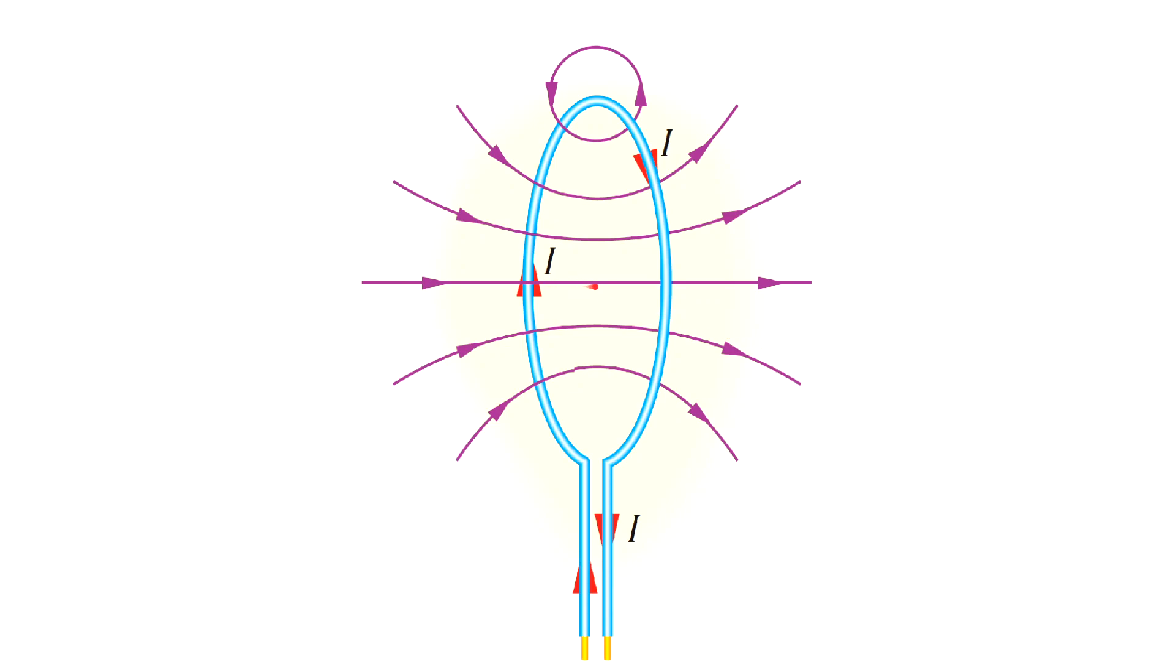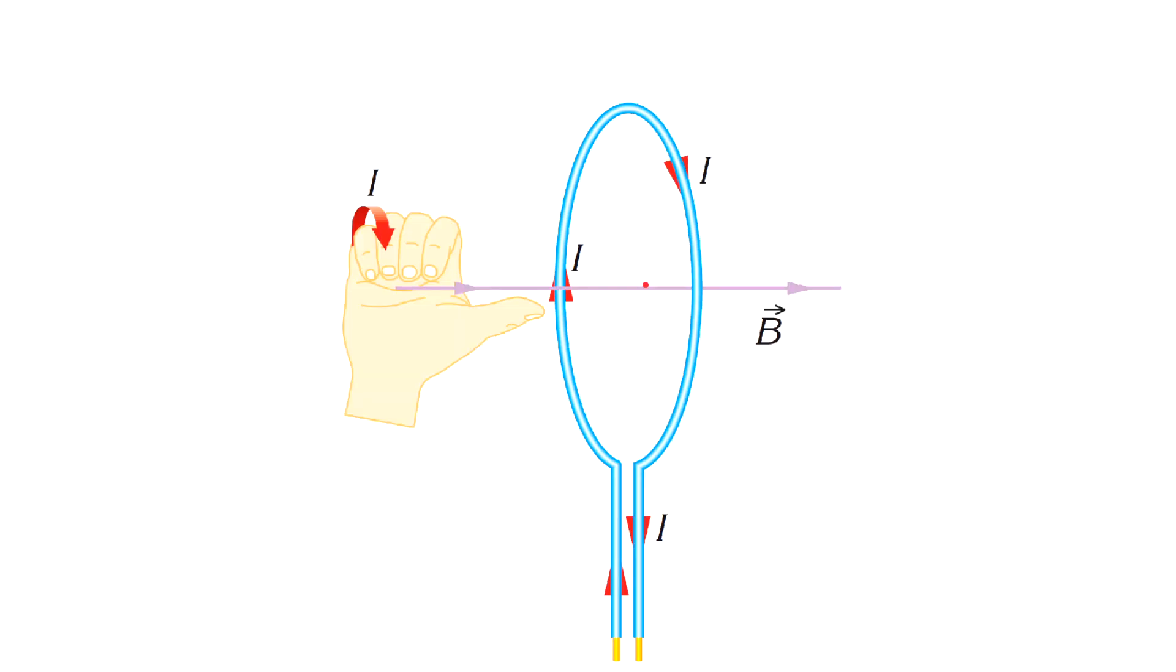These are magnetic field lines of a loop. For a circular loop the right hand rule is used in the following way: curl your fingers in the direction of the current and your thumb will indicate the direction of the magnetic field.